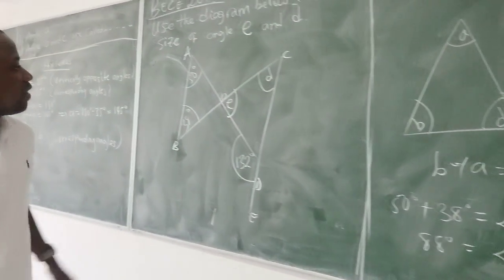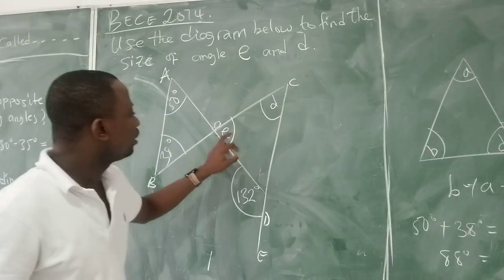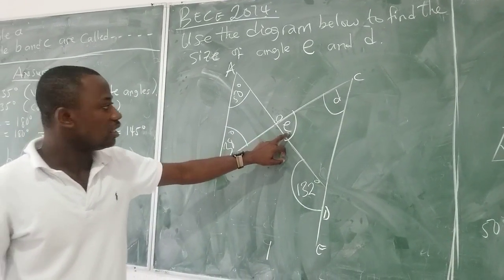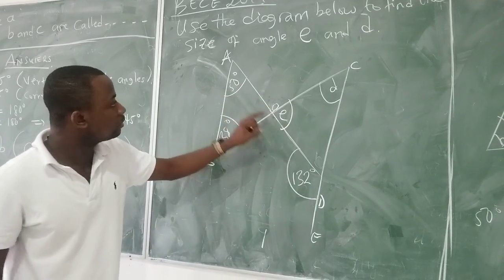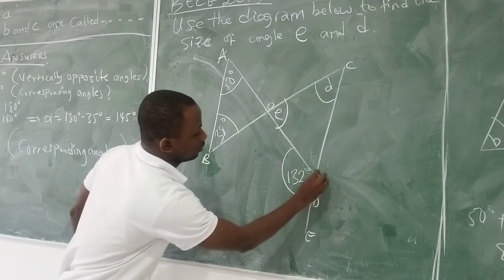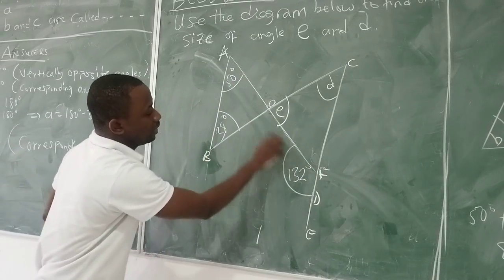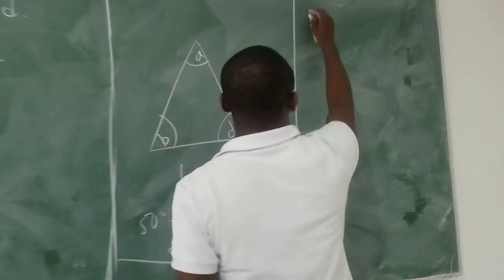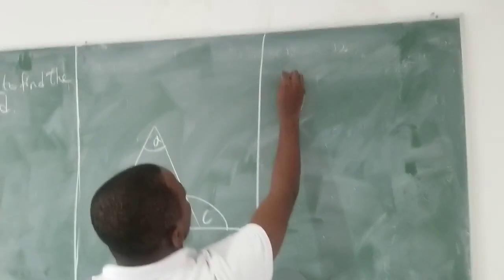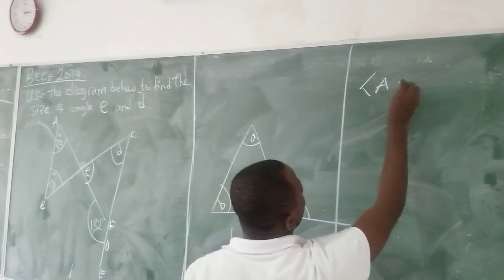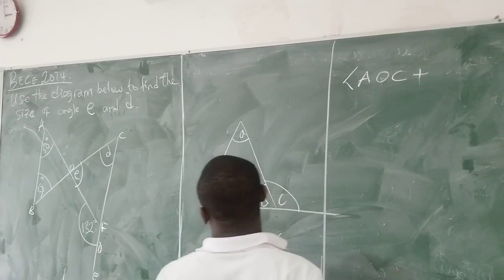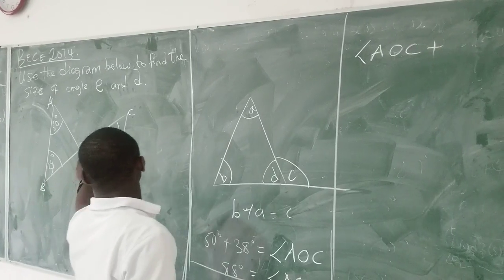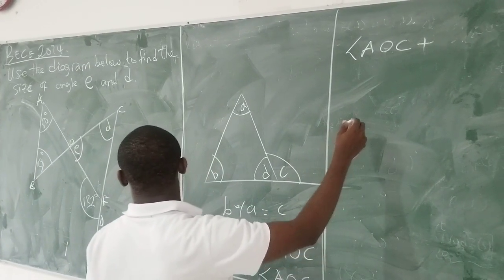Now that I have angle AOC, I should be able to find angle E. You can see that they all lie on line AF. So angle AOC plus angle FOC should equal 180 degrees.